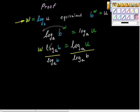Log base a of b is a number, and this is the same number, and a number over itself is one. So we get w is equal to log base a of u over log base a of b.